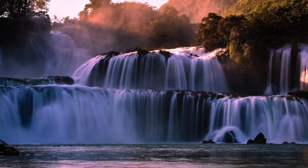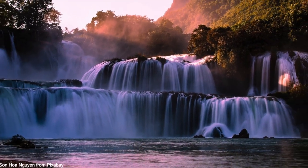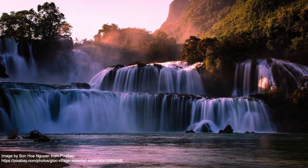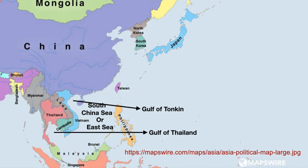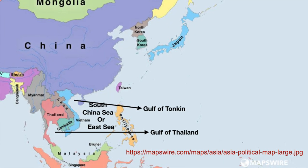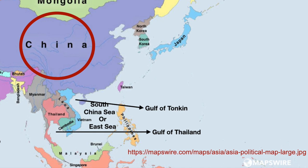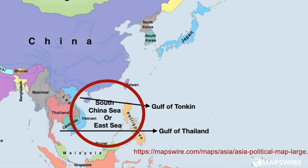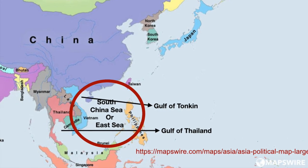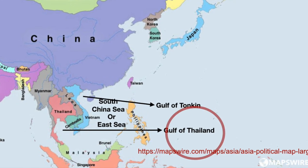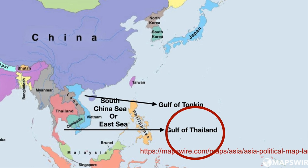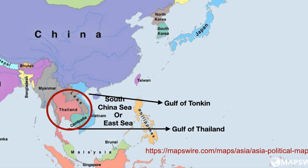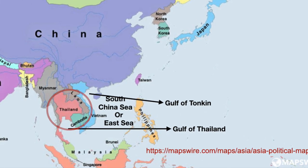They can easily gain knowledge from this. The Southeast Asian country Vietnam is surrounded by China in the north, the South China Sea or the East Sea in the south and east, the Gulf of Thailand in the southwest, and Cambodia and Laos to the west.